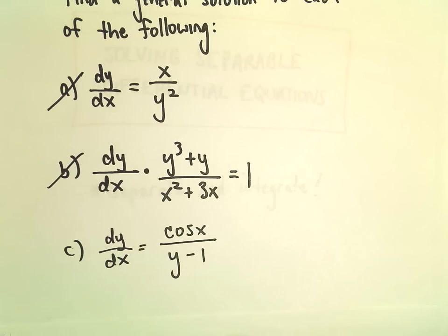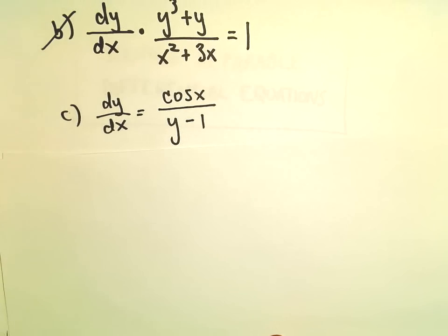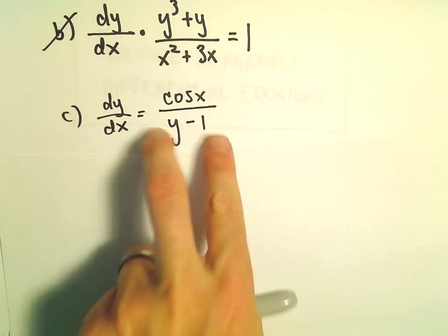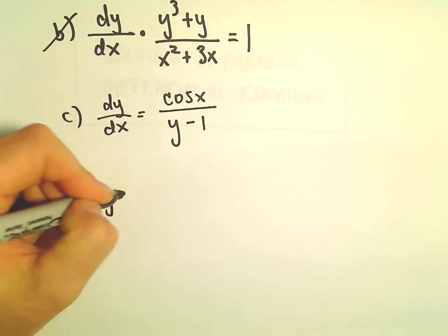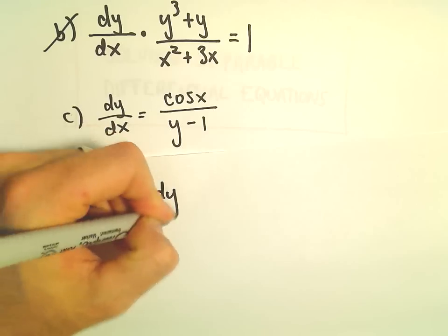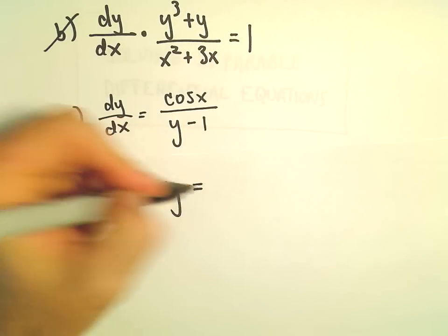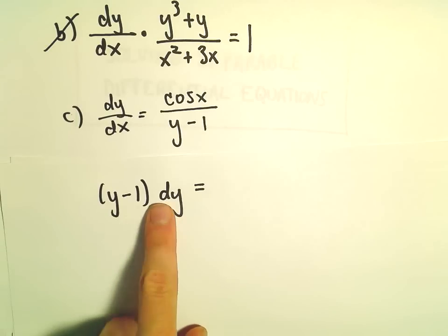I'm going to do the same thing as on the other ones. I'm just going to cross multiply. So, we would have dy times the quantity y minus 1. I'm going to put the dy on the right side, or excuse me, to the right of the y minus 1.